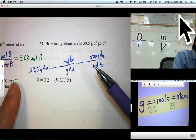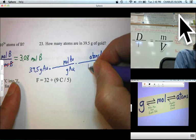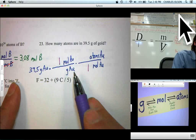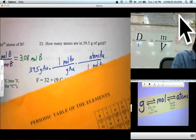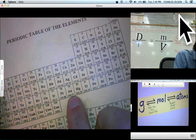We know in conversion factors, we always put a 1 in front of moles. And how many grams of gold per mole of gold? Well, that's the molar mass. How many grams per mole? Let's see. 196.97.